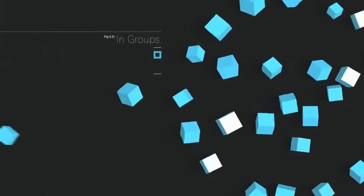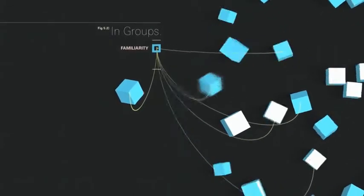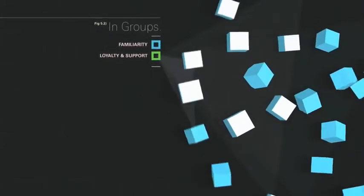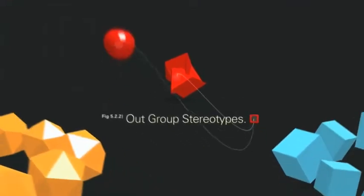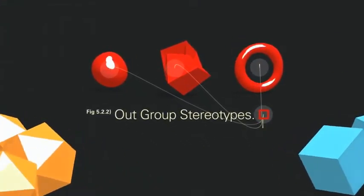People who are like us in some way or those who we are familiar with through association become our in-group and receive our loyalty and support. In contrast, we stereotype people in terms of their out-group membership and then treat them differently as a result.